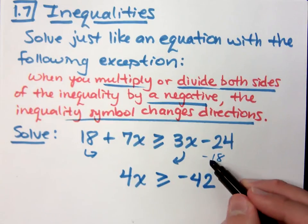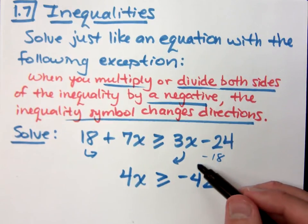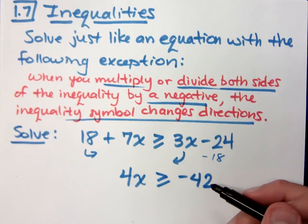Notice that even though I've got a negative here, this negative 18, all I'm doing is adding and subtracting on both sides of the equation. That does not change the direction of the inequality.